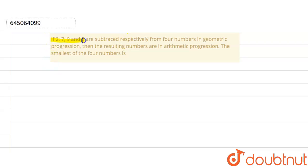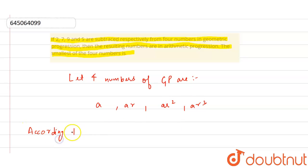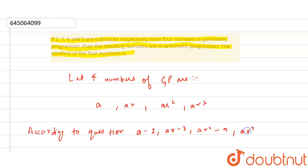The question given to us is: if 2, 7, 9 and 5 are subtracted respectively from 4 numbers in geometric progression, then the resulting numbers are in arithmetic progression. We need to find the smallest of the 4 numbers. Let the 4 numbers of GP be A, AR, AR squared and AR cubed. According to the question, A minus 2, AR minus 7, AR squared minus 9 and AR cubed minus 5 are in AP.